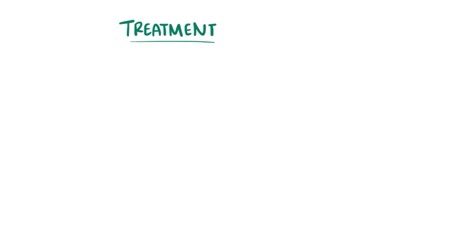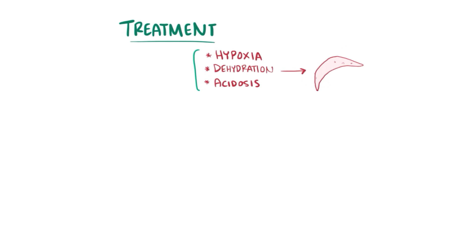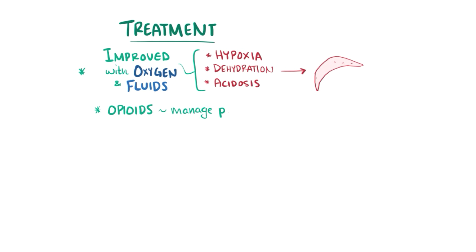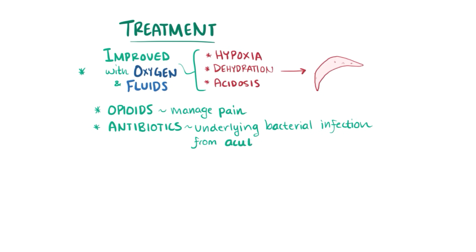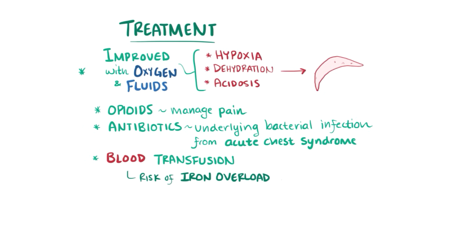The factors that cause red blood cells to sickle — hypoxia, dehydration, and acidosis — can be improved with oxygen and fluids, which are mainstays of treatment. In addition, opioids are usually used to manage pain and antibiotics are used to treat any underlying bacterial infections causing acute chest syndrome. Occasionally, blood transfusions are also used, but the risks of multiple transfusions include iron overload and the risk of developing new antibodies against future blood transfusions.